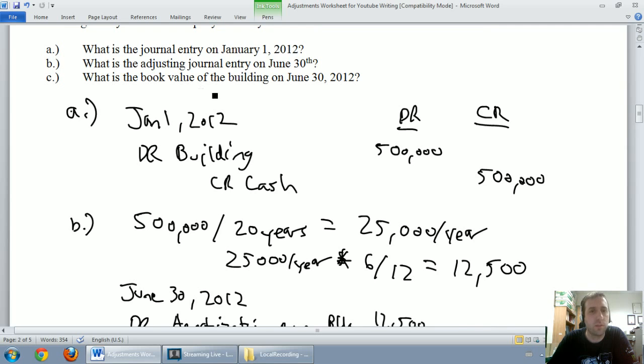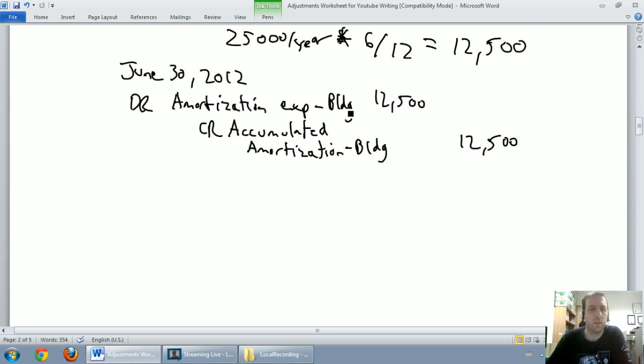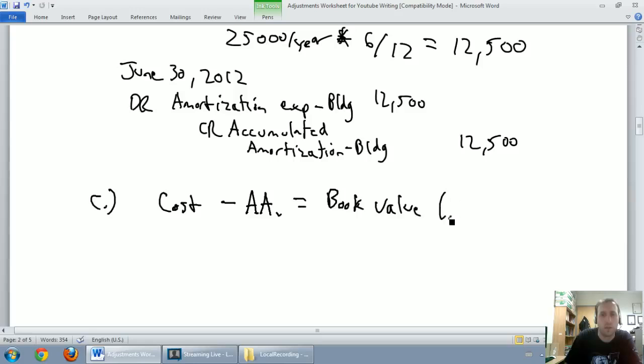The final part of the question says, what's the book value of the building on June 30th, 2012? Basically they're saying, what's this building worth on paper? What's it worth according to our books, according to our records on June 30th? It's a $500,000 building, but we've said it's lost $12,500 of its value. The book value calculation is: cost (what we paid for it) minus accumulated amortization equals book value, sometimes called net book value. The cost of our asset was $500,000.